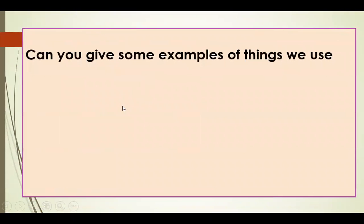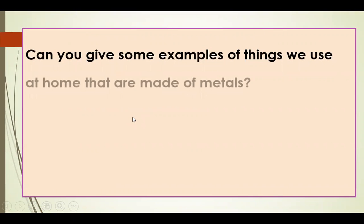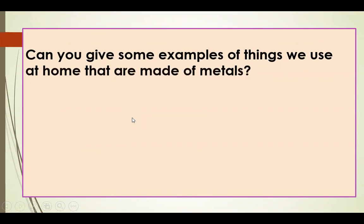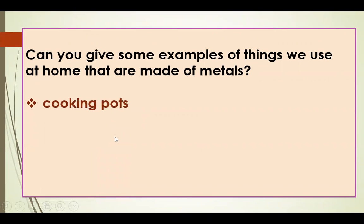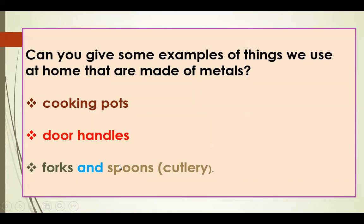Can you give some examples of things we use at home that are made of metals? Your answers: cooking pots, door handles, forks and spoons.